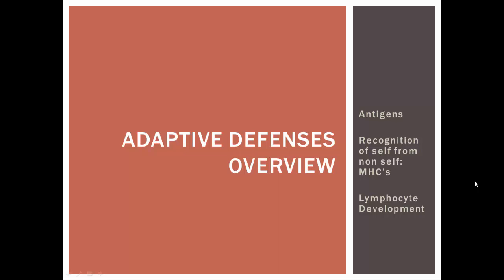Now we're ready to look at adaptive defenses and see how they work in finding off foreign cells or antigens. In this video we're going to look at an overview of our adaptive defenses, particularly what are our antigens and how does our body recognize self from non-self. And then let's look at lymphocyte development — how do we make T cells and B cells.